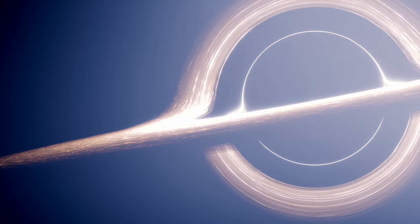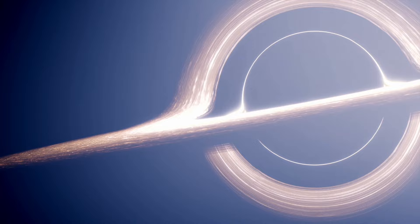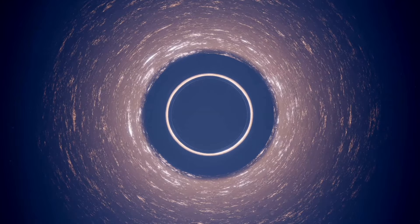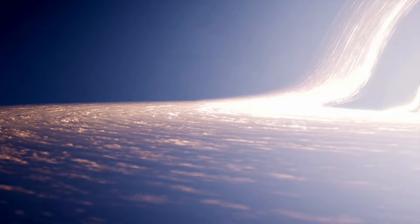General relativity also suggests that if the apparent position of Sagittarius A-star were perfectly centered on the black hole, it could be magnified due to gravitational lensing, forming a ring-like structure about 5.2 times the size of the black hole's Schwarzschild radius. However, observations align with an apparent size of about 50 micro-arcseconds, corresponding to a diameter of approximately 52 micro-arcseconds.